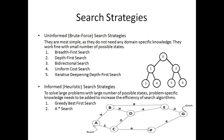Once we understand what searching is and how we can solve a problem in artificial intelligence with the help of searching, we need to understand what different search strategies we have to follow. We need to pick one of the basic search strategies to solve a specific problem, or to reach the goal node when starting from the initial node. Generally there are two specific types of search strategies: uninformed search and informed search.